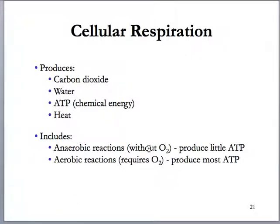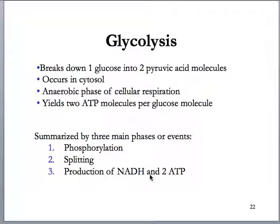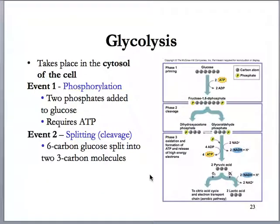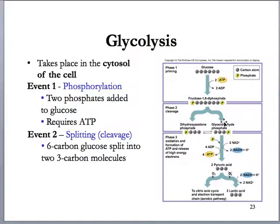Again, anaerobic without oxygen is glycolysis; aerobic requires oxygen — that's the citric acid cycle and the electron transport chain. So, glycolysis. There are three major steps to glycolysis, and these big arrows represent a series of reactions. This is a very simplified pathway. I don't expect you to know all of these intermediates. I want you to understand: what is the point of glycolysis? What are we putting in, and what are we getting out?